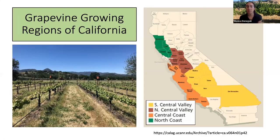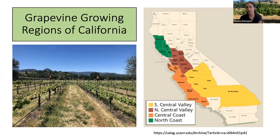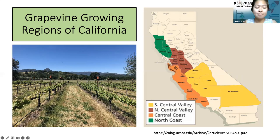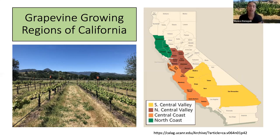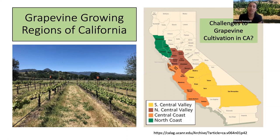When people think of grapevine growing regions of California, they typically think of Napa and Sonoma, but grapevines are actually grown all across the state, both along the coast and throughout the Central Valley. Grapevine production is really important to the state's economy and identity, and it spans a really wide geographic area with a lot of different climates — the south Central Valley is really warm, and it gets colder up north. Can anyone think of any challenges to grapevine cultivation in California?